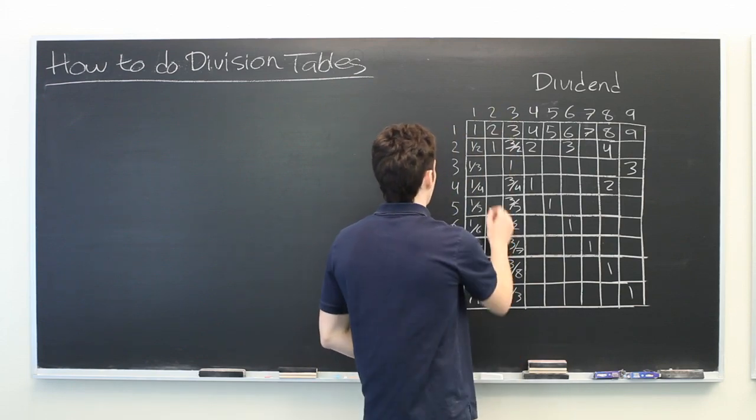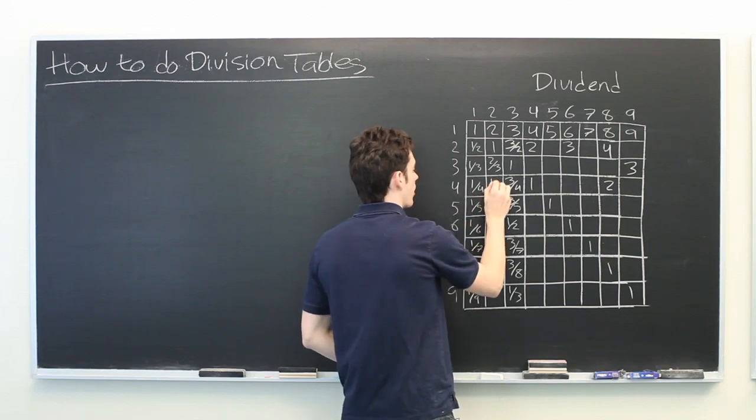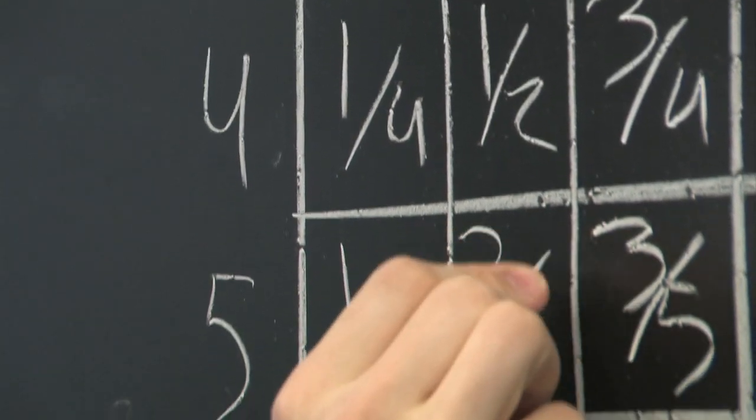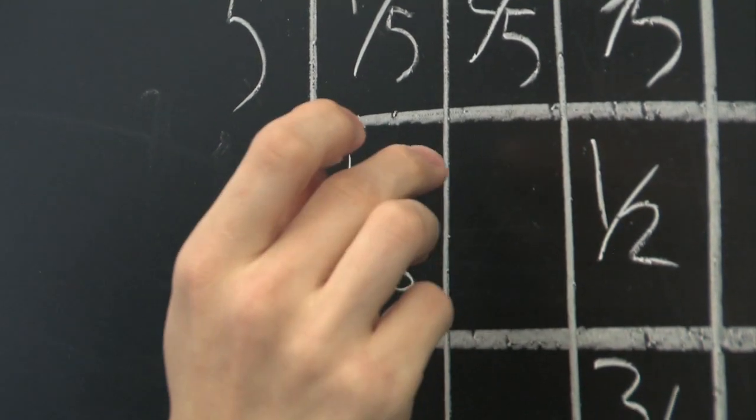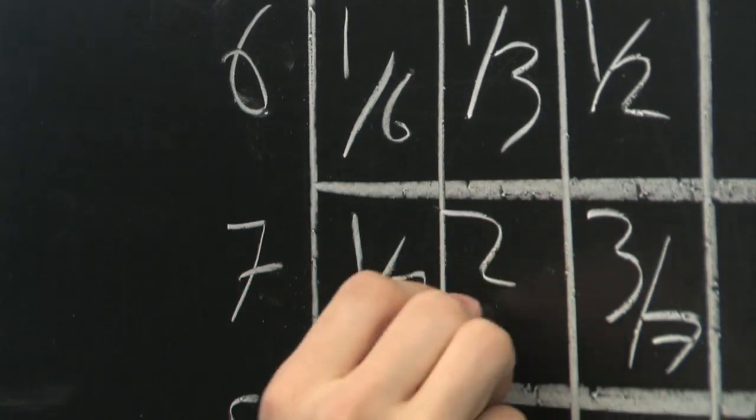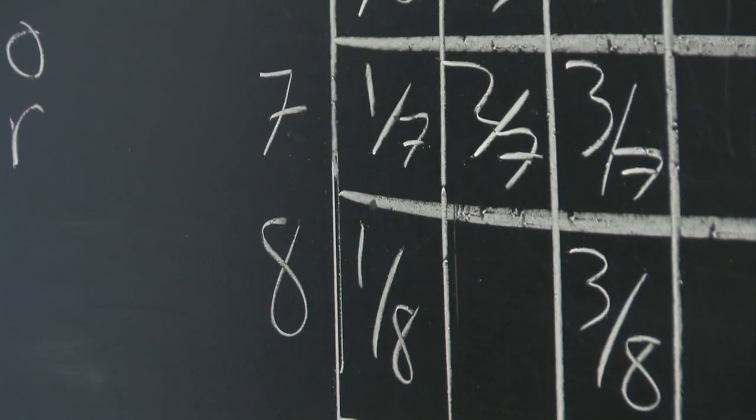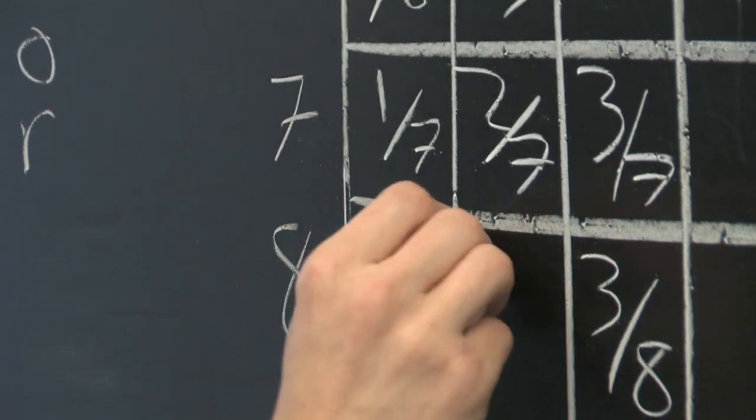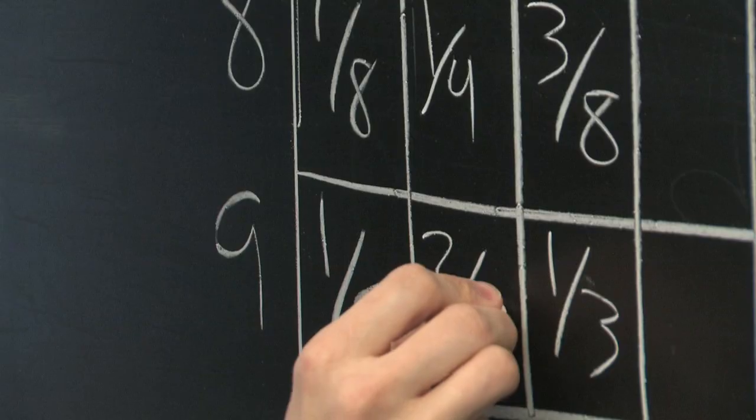Let's do this column. Two-thirds, two over four becomes one-half. Two-fifths, two over six becomes one-third. Two over seven stays as it is. You notice that every other entry simplifies here. Two over eight becomes one-fourth. And two over nine stays as it is.